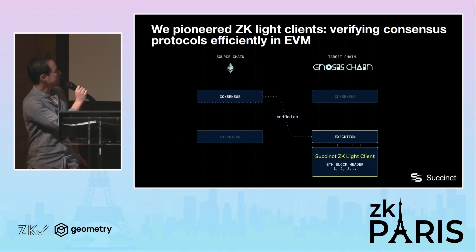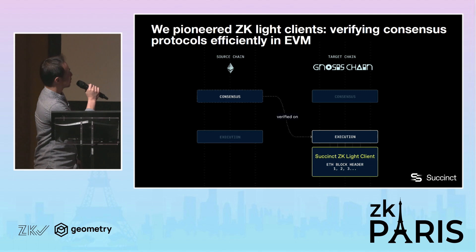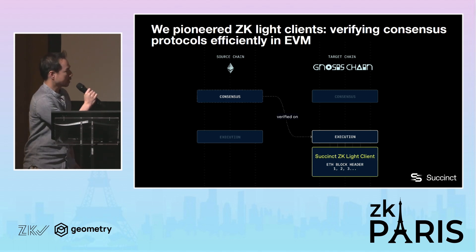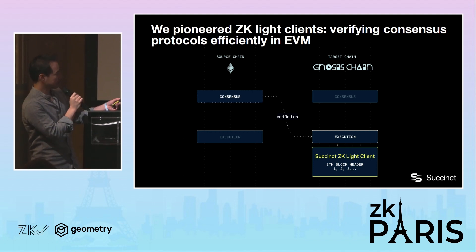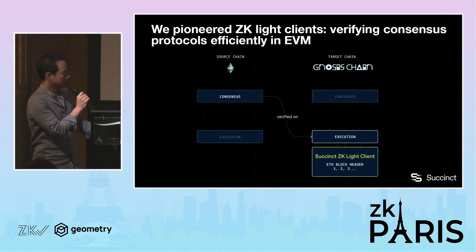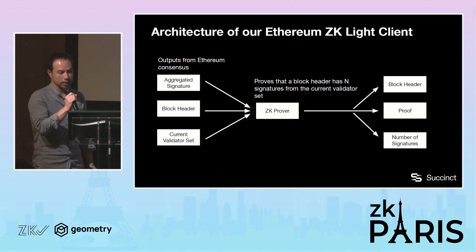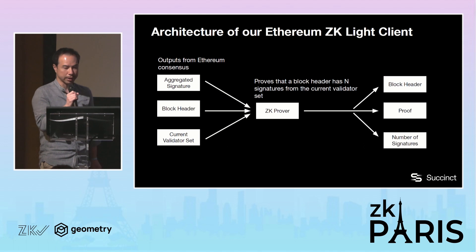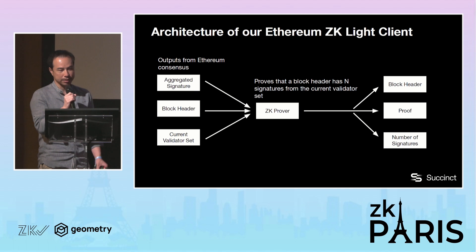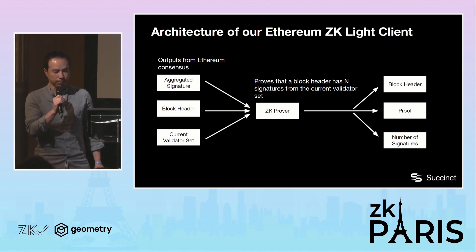Here's an illustrative example of what we're doing. We have a circuit that verifies consensus — specifically the Ethereum light client consensus. The generated proof is then verified on an execution chain that is EVM compatible. Basically, this proof attests that these block headers are all valid. The inputs into our prover are the artifacts of the Ethereum consensus protocol: the aggregated signature, the block headers that are mined, and the current validator set. What is outputted is the generated proof attesting that the block header is valid and the number of signatures.